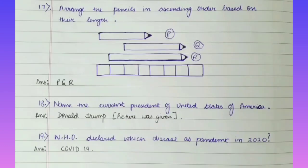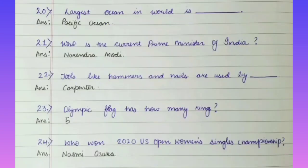Question No. 19: WHO declared which disease as a pandemic in 2020? Answer is COVID-19. Question No. 20: The largest ocean in the world is Dash. Answer is Pacific Ocean. Question No. 21: Who is the current Prime Minister of India? Answer is Narendra Modi.